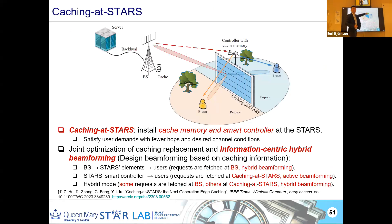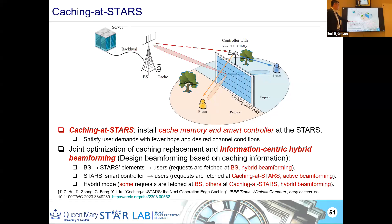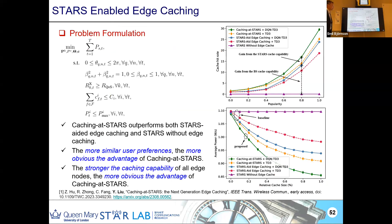For caching-STARS, we install cache memory and a smart controller on the STARS to satisfy user demands with fewer hops and better channel conditions. We jointly optimize caching placement, replacement, and information-centric hybrid beamforming, and can design either single-mode or hybrid-mode caching.